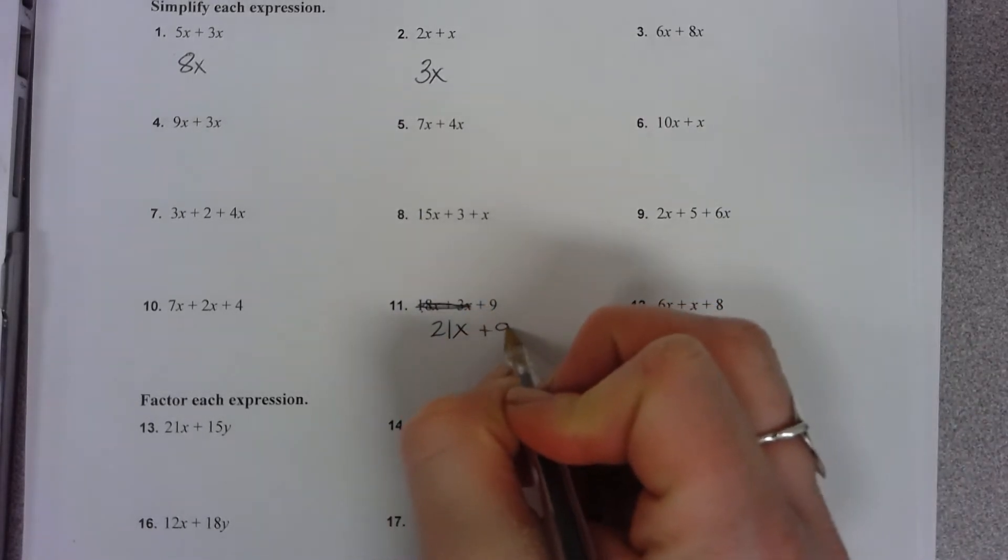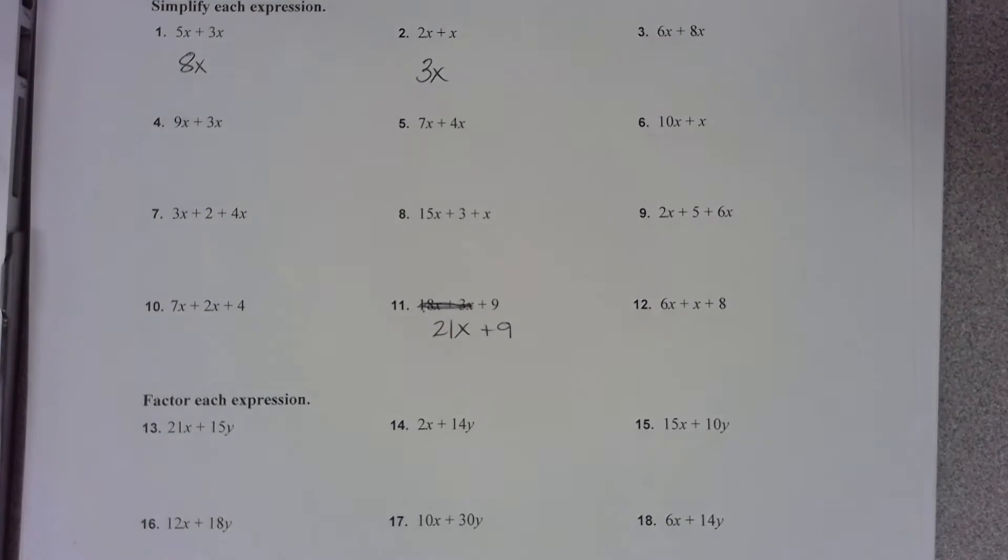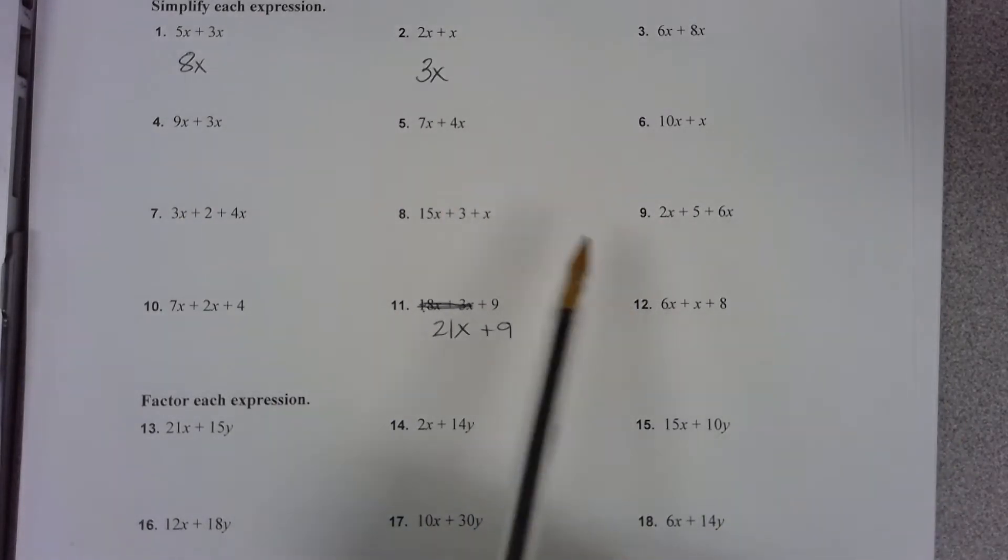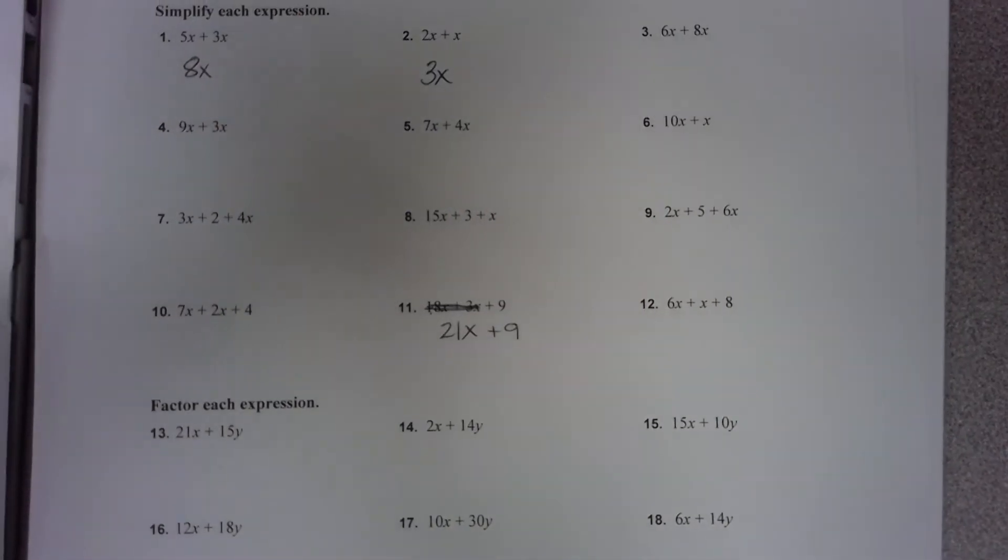And we're left with plus 9. Nothing else can be combined with that 9. So our answer would be 21x plus 9. Okay, so that should be a review. I'm going to have you do the rest of these problems as your assignment today.